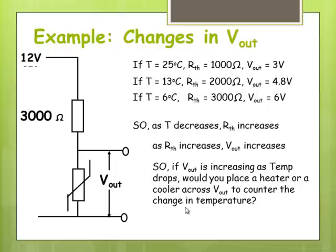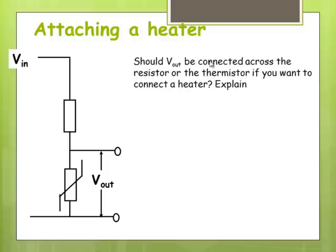So if we want to counter the change, that is if the temperature keeps dropping, we need to increase the temperature. That means we want a heater placed across the thermistor. So attaching a heater, this is fairly typical of what they would ask of you in VCE question. Should it be connected across the resistor or the thermistor? Explain.